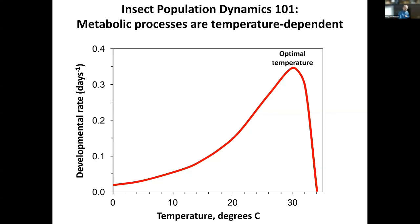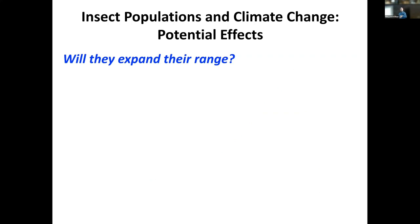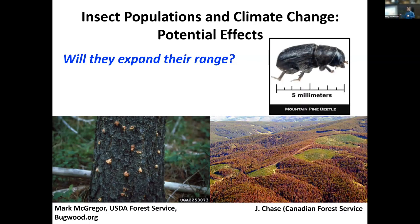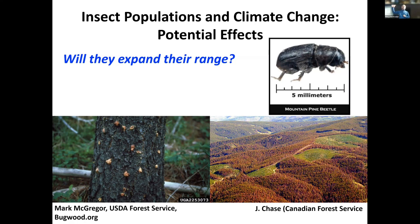Some common questions we think about with climate change and insects: knowing that insects are so integrally tied to temperature, will they expand their range? We have a very good example of range expansion with the mountain pine beetle, particularly in British Columbia and more recently in Alberta. Some of the fires burning in Alberta are a direct consequence of standing dead trees in that area. This is a native species, evolutionarily adapted to feeding in those climates and tree conditions.